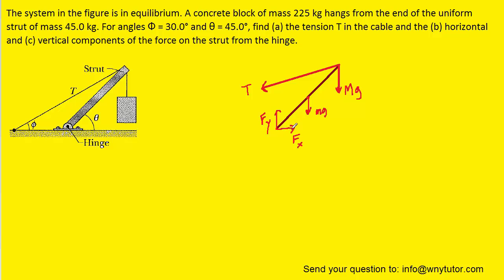We have a force fx pointing to the right and a force fy pointing up. The reason we have a force pointing to the right is because the tension is pulling on the strut to the left, and in order for the strut to remain in equilibrium we need a force pointing to the right to cancel out that leftward tension — that's why we have fx. And fy comes about because as the strut pushes into the ground, the ground in response pushes up on the strut. It's basically a normal force.